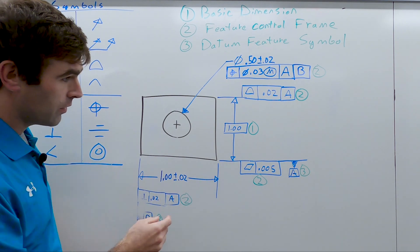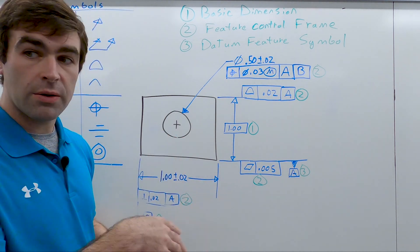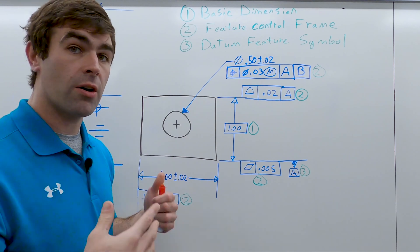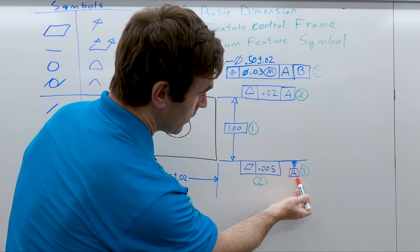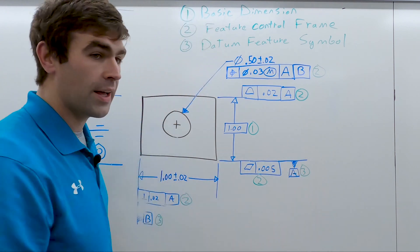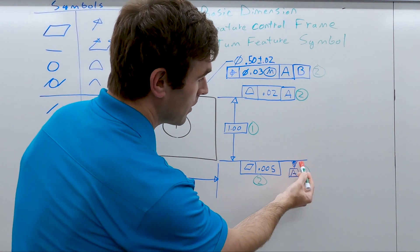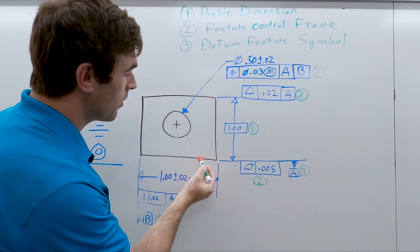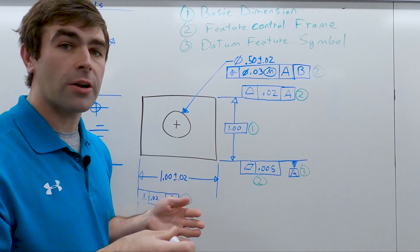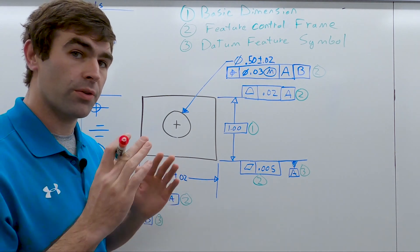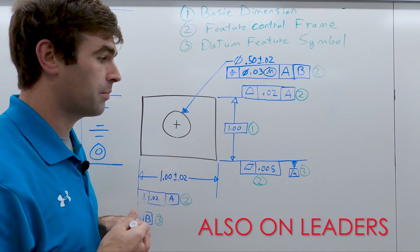The first thing we're going to look for on any drawing with GD&T are our datum feature symbols. Datum feature symbols are a little box with a letter in it connected to either an extension line, the surface of the part, or sometimes they'll be stuck to a feature control frame. Those are the three places they can be.